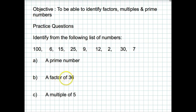Hi, welcome back. Let's go through these two questions then. Question 1. It says identify from the following list of numbers: I've got a list here. A prime number, factor of 36, and multiple of 5.